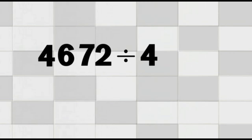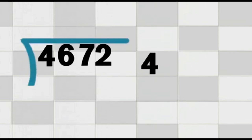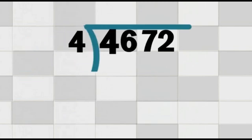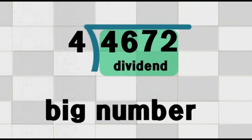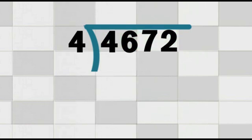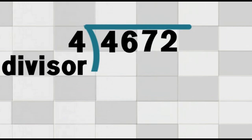First, we set up the division problem using the long division bracket. We write the number 4,672 under the division bracket. This number is called the dividend — it's the big number we are dividing. Then, we write the number 4 outside the division bracket to the left. This number is called the divisor — it's the number we are dividing by.